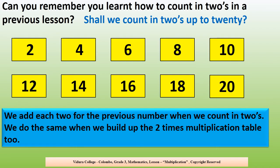We add each 2 for the previous number when we count in 2's. We do the same thing when we build up the 2 times multiplication table too.